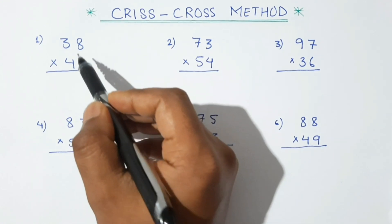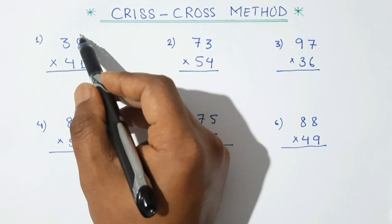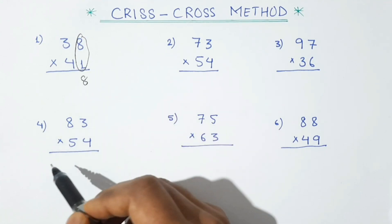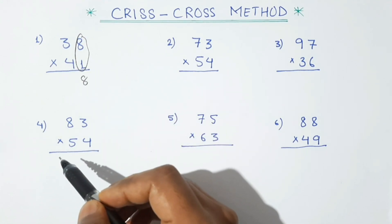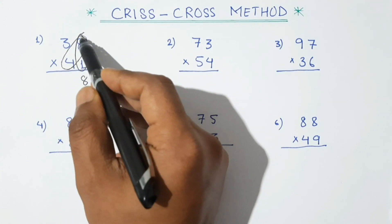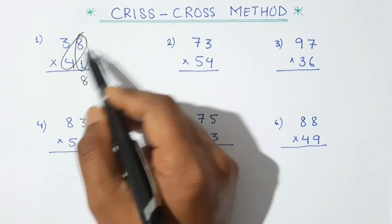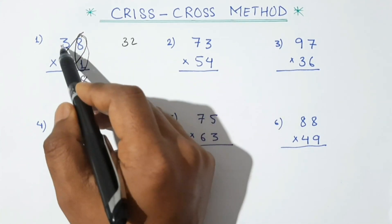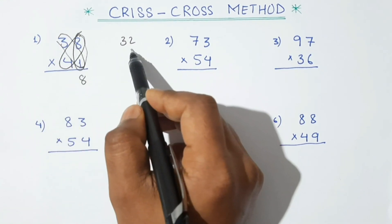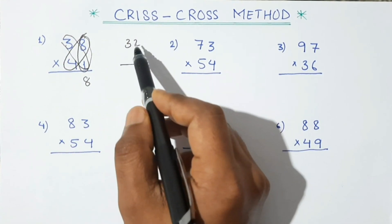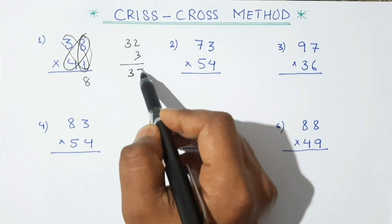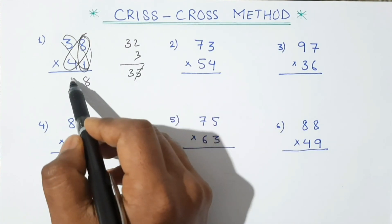First, we multiply 8 and 1: 8 ones are 8. Second, we multiply in a cross way: 4×8 is 32, and 3×1 is 3. So we add 32 plus 3, which is 35. We write only one digit here — 5 — and carry the 3.